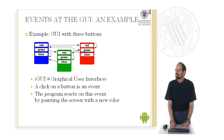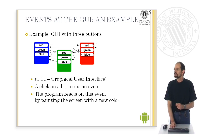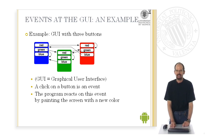First, a look at an example. We have here an application and this application has three buttons: red, green, and blue. By clicking on one of the buttons, you change the color of the screen. So a click on a button is an event and the program reacts on this event by changing the color of the screen.